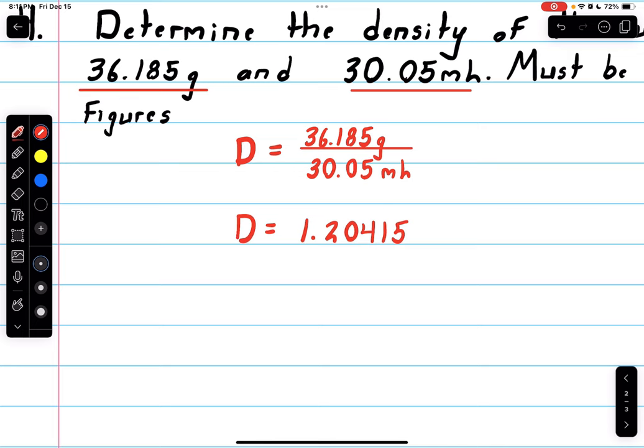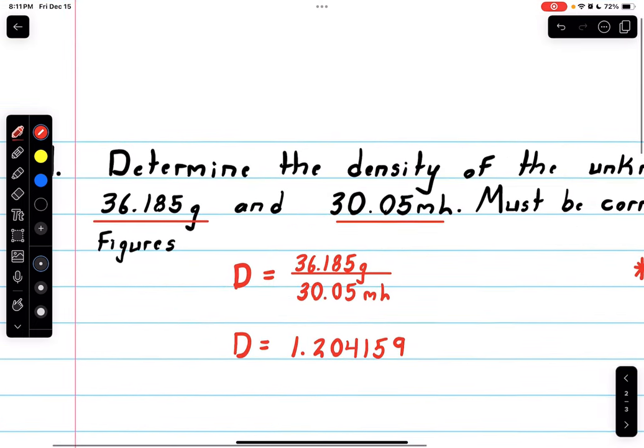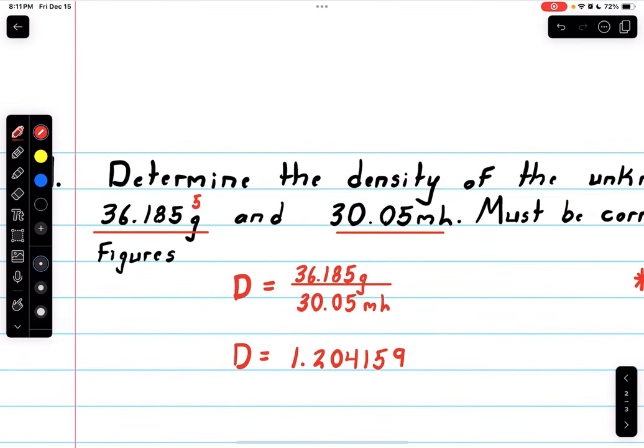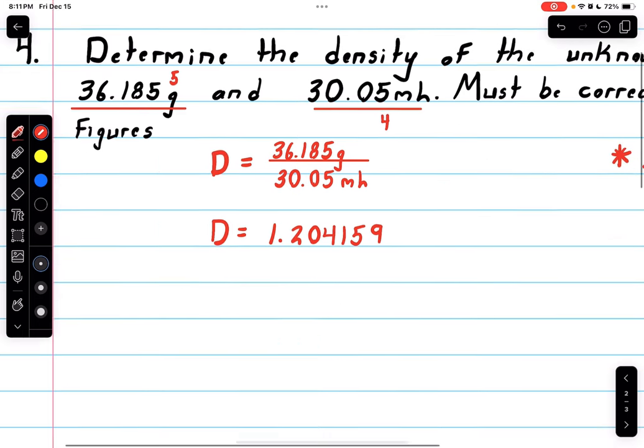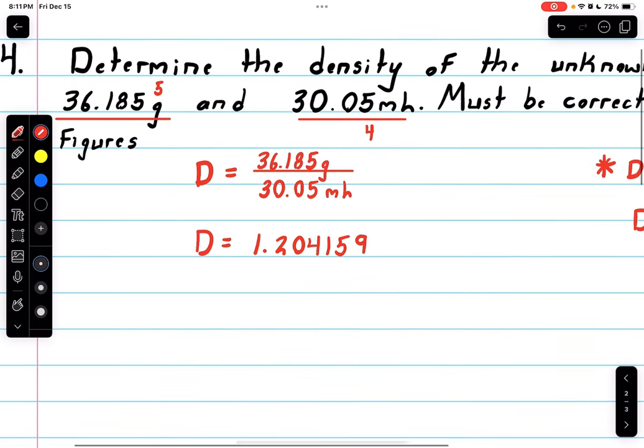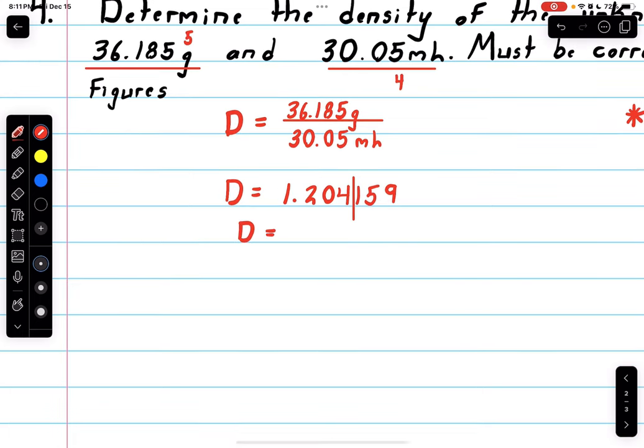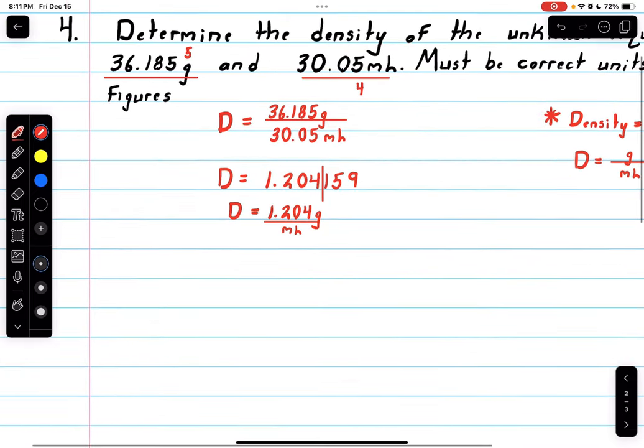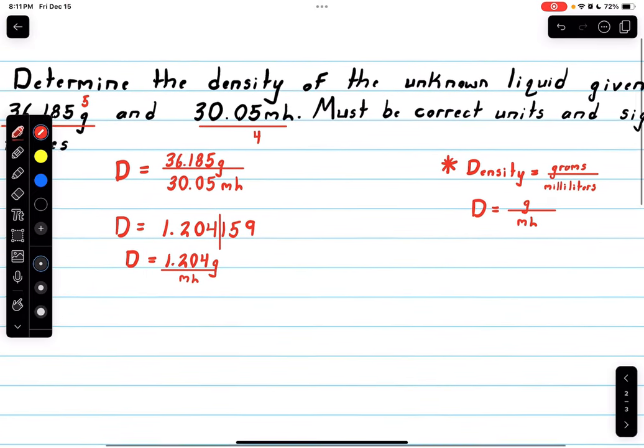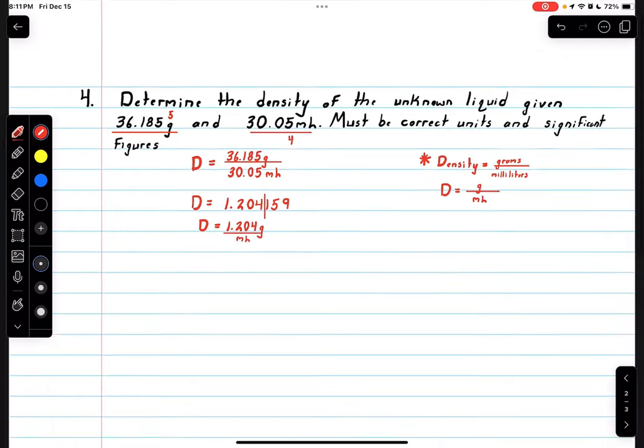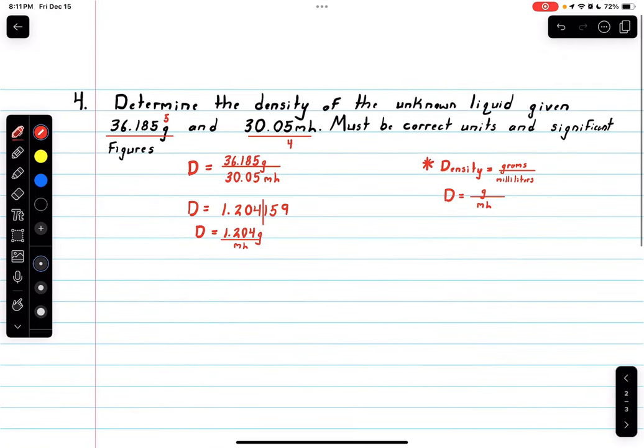Going for the density calculation, it comes out to Density = 1.204159, and this is where I usually cut it off. Since we have five sig figs here and four sig figs here, we go to the lowest, which is four. We end up with Density = 1.204 grams over milliliters, and that is your final answer since the density form is grams over milliliters. That's exactly what we found. I hope you enjoyed this video, and there will be many more to come. Thank you so much.